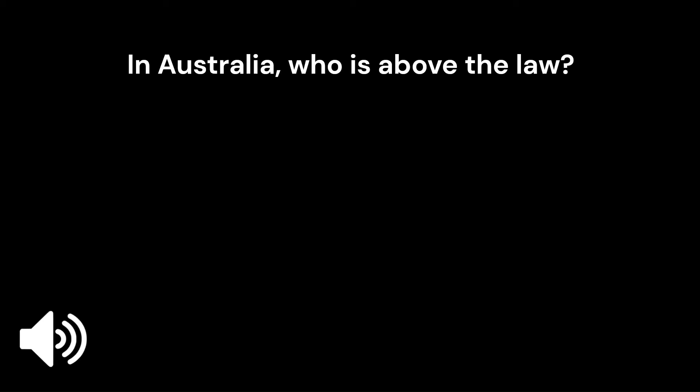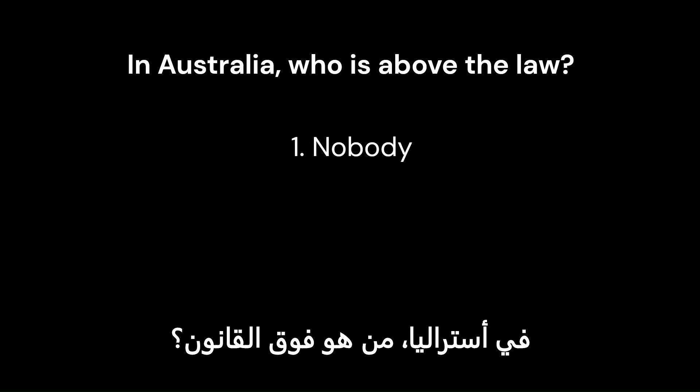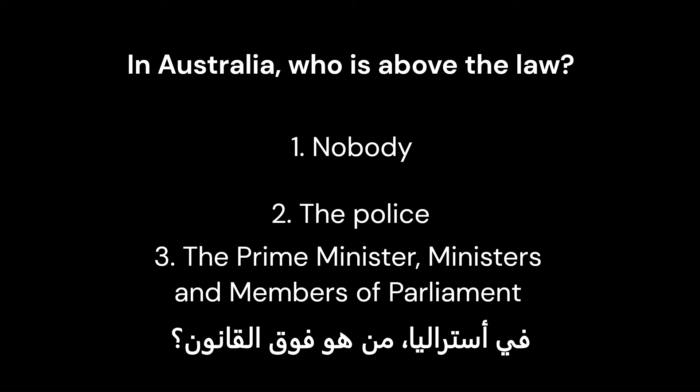In Australia, who is above the law? 1. Nobody. 2. The police. 3. The Prime Minister, Ministers and Members of Parliament.